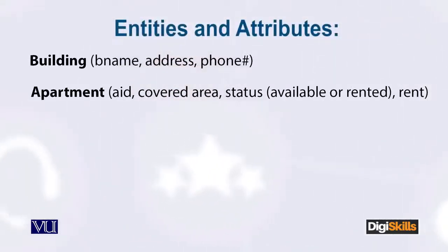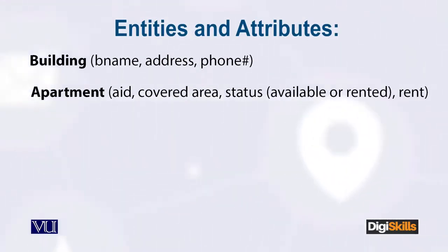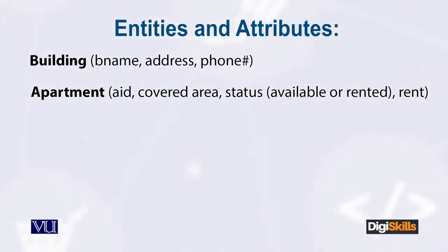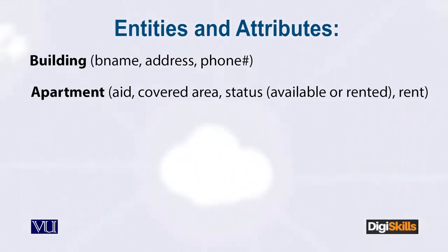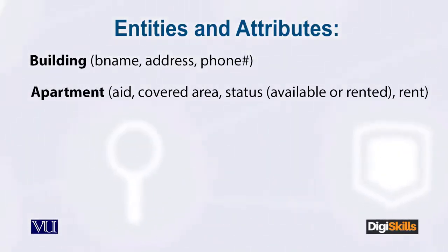For apartments: there will be some kind of apartment ID — just like your student ID — a covered area, and a status indicating whether it is rented or not. There can also be very interesting attributes, for example, whether the rent decreases if the apartment is rented for two months. So the rent attribute can also come in. I have intentionally left some loopholes — I just want you to think about it.